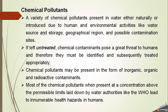There are different types of chemical pollutants present in water, either naturally occurring or induced by human and environmental activities. The source, storage, geographical region, and possible contamination sites all affect water chemistry. For example, water from sulfur-rich areas may contain sulfur compounds; water from salty regions may be high in sodium or chloride. If left untreated, chemical contaminants pose a great threat to humans.